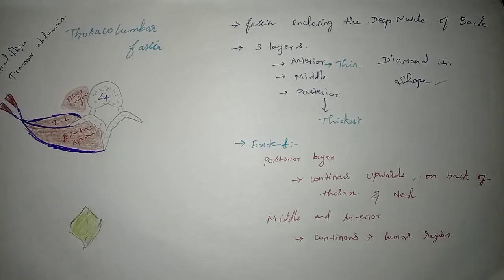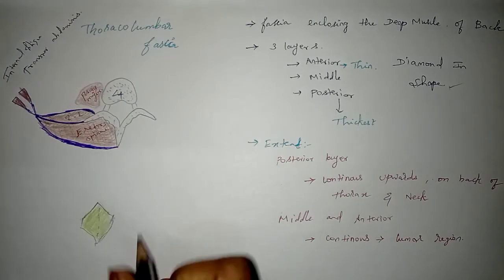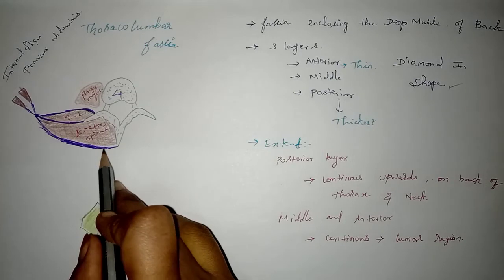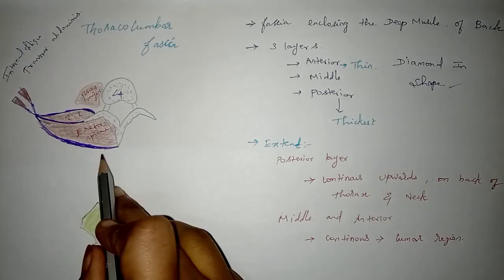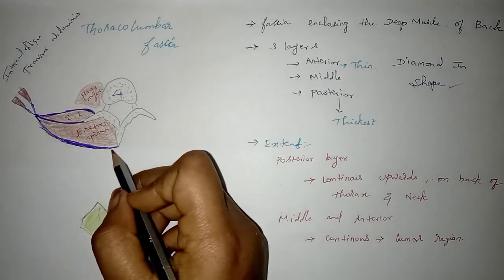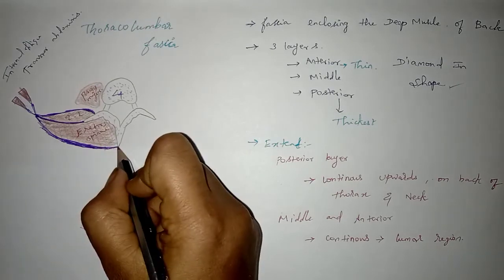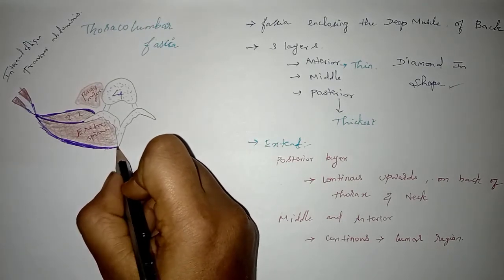The posterior layer is continuous backwards on the back of the thorax and neck. The middle and anterior layers are continuous in the lumbar region. For attachments, the posterior layer medially is attached to the lumbar and sacral spines and also the interspinous ligament.